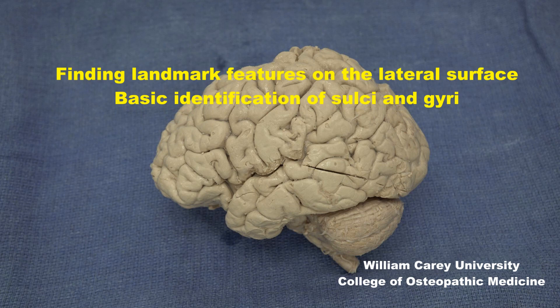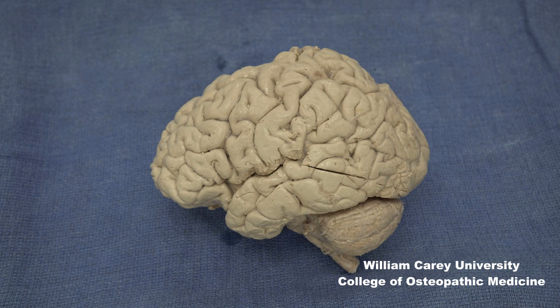The goal of this video is to identify relevant sulci and gyri in each lobe visible from the lateral perspective. We start in the frontal lobe. The frontal lobe begins at the anterior or frontal pole and ends posteriorly at the central sulcus.